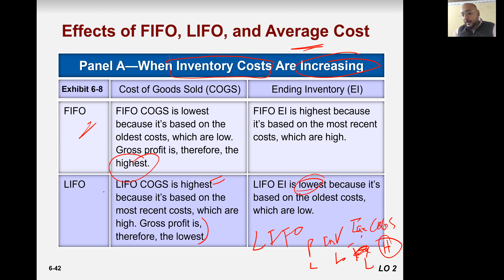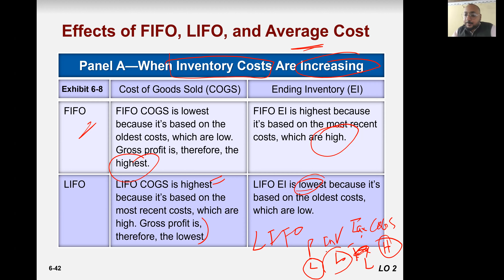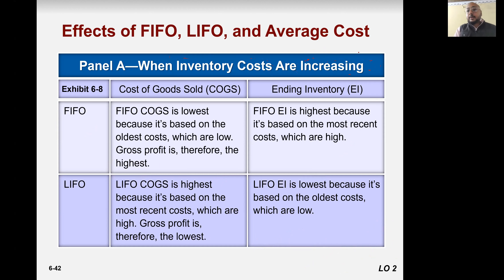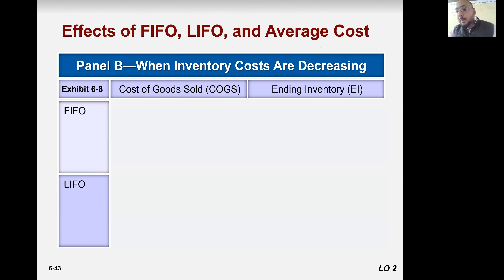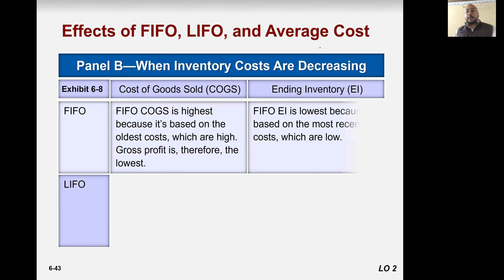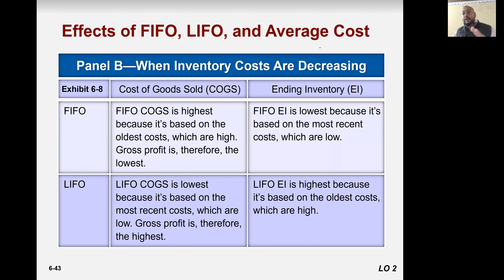Remember, this analysis applies when prices are rising. But when there is a deflationary period — when prices are decreasing — everything becomes opposite. In deflation, FIFO cost of goods sold is higher, profit is lower, inventory is lower, and taxes are lower. While LIFO in deflation gives lower cost of goods sold, higher profit, higher ending inventory, and higher taxes.